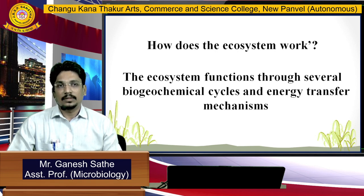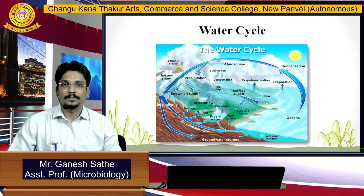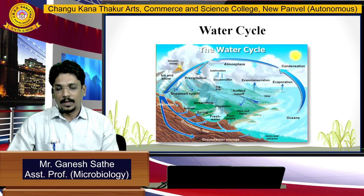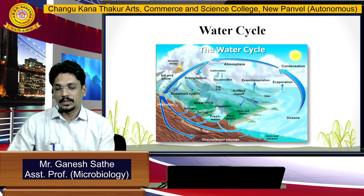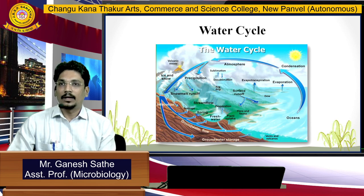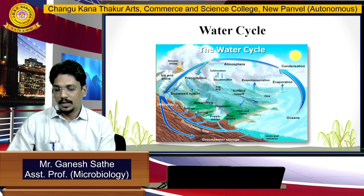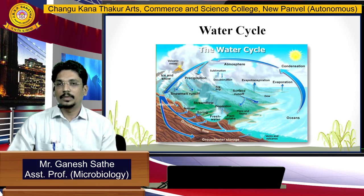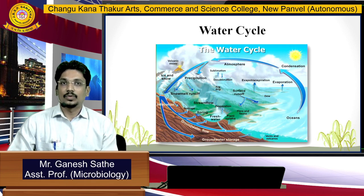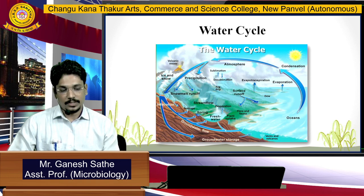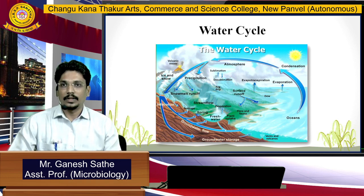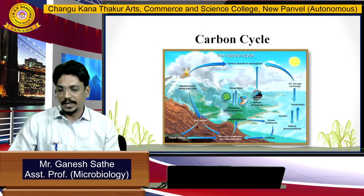I am going to explain these biogeochemical cycles one by one. We have the water cycle. Water is part of the oceans. The ocean comes in contact with sunlight, which evaporates the water. It is transferred through the atmosphere, comes in contact with different plateaus and mountains, then precipitates. Groundwater storage occurs, and water comes back to the oceans. Through the water cycle, water is transferred from the ocean onto the terrestrial ecosystem and into the soil.